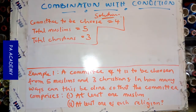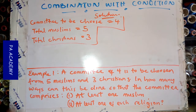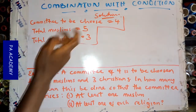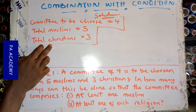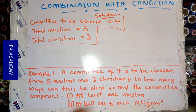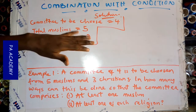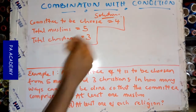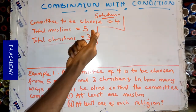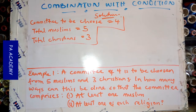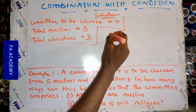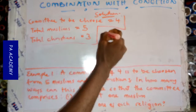For the first condition — at least one Muslim — what it means is that we have to choose a committee of four, with five Muslims and three Christians total, such that at least one Muslim is included. These are the possible ways we can do it. The first way: we can have one Muslim and three Christians.